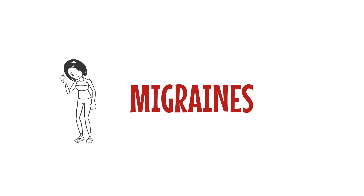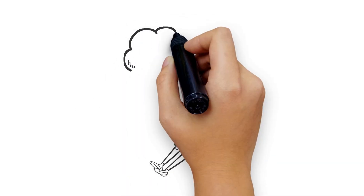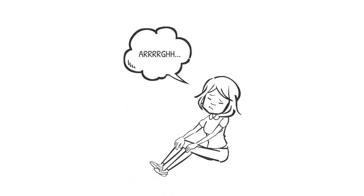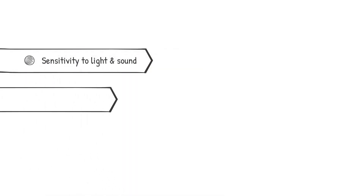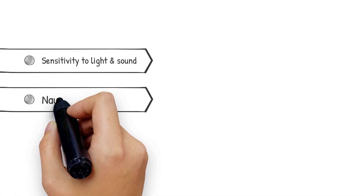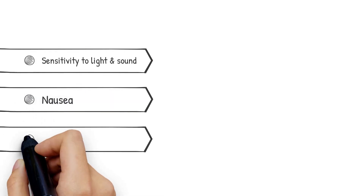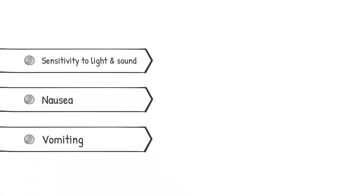A migraine is an intense headache that can cause severe throbbing pain, usually on one side of the head. Other symptoms include sensitivity to light and sound, nausea and vomiting.